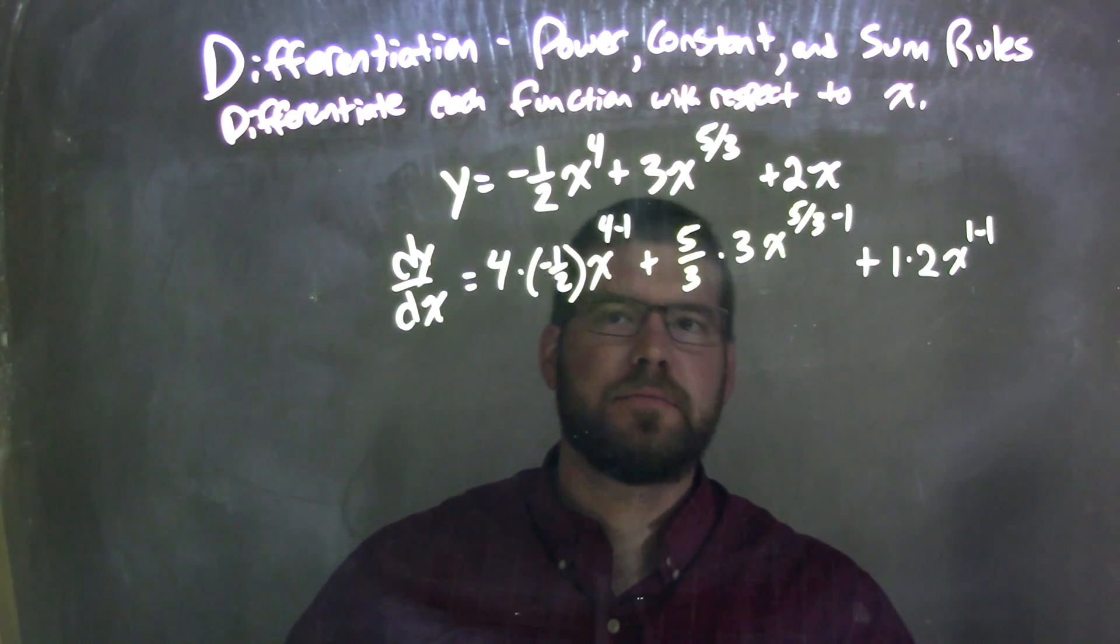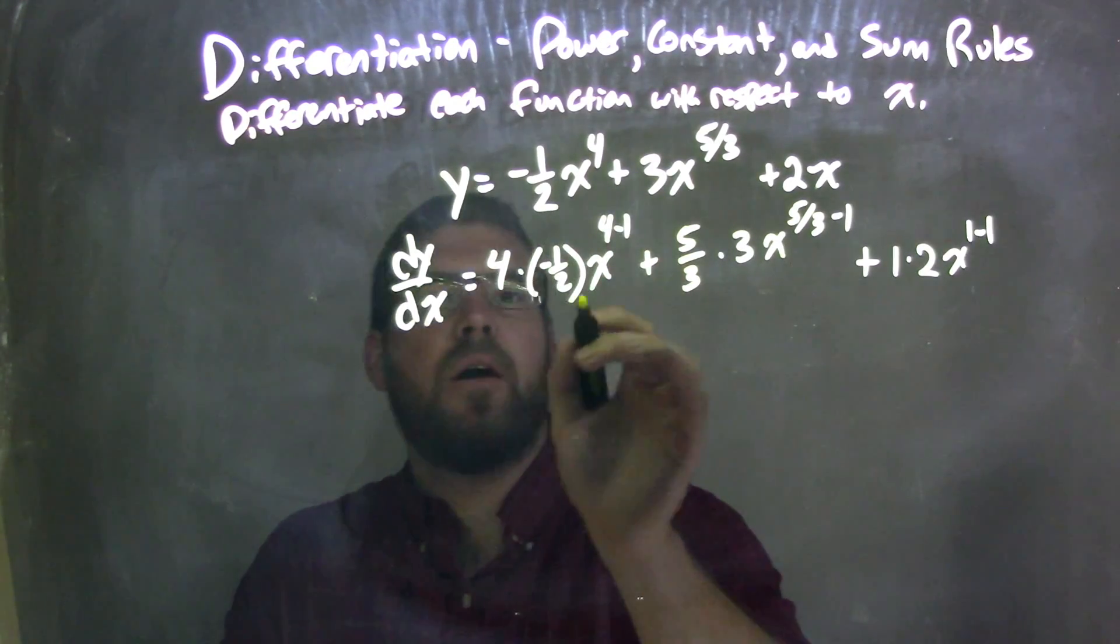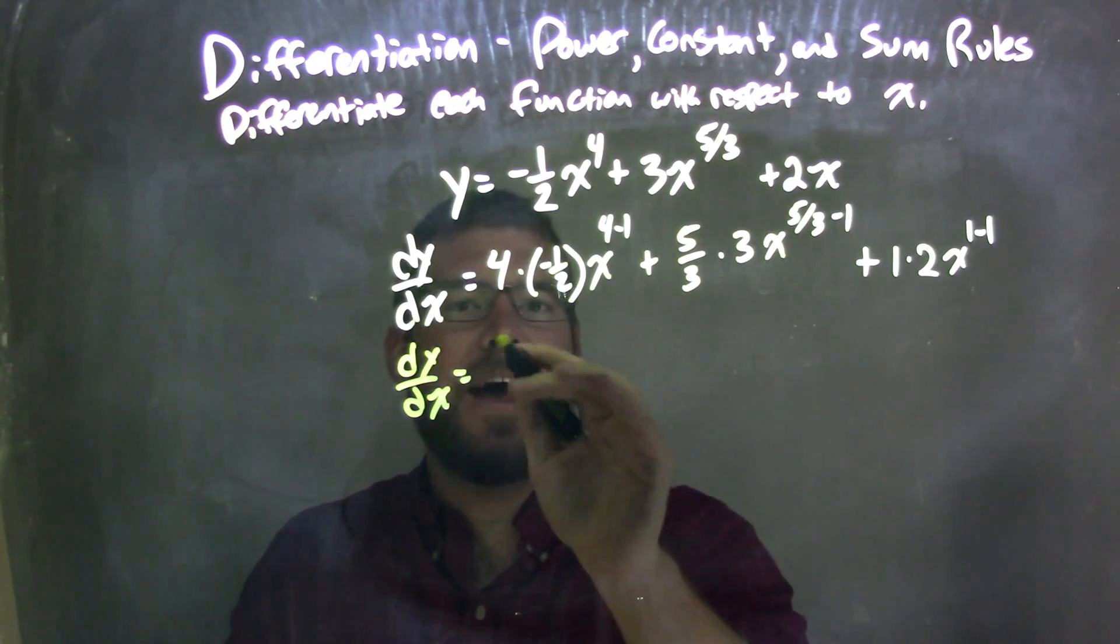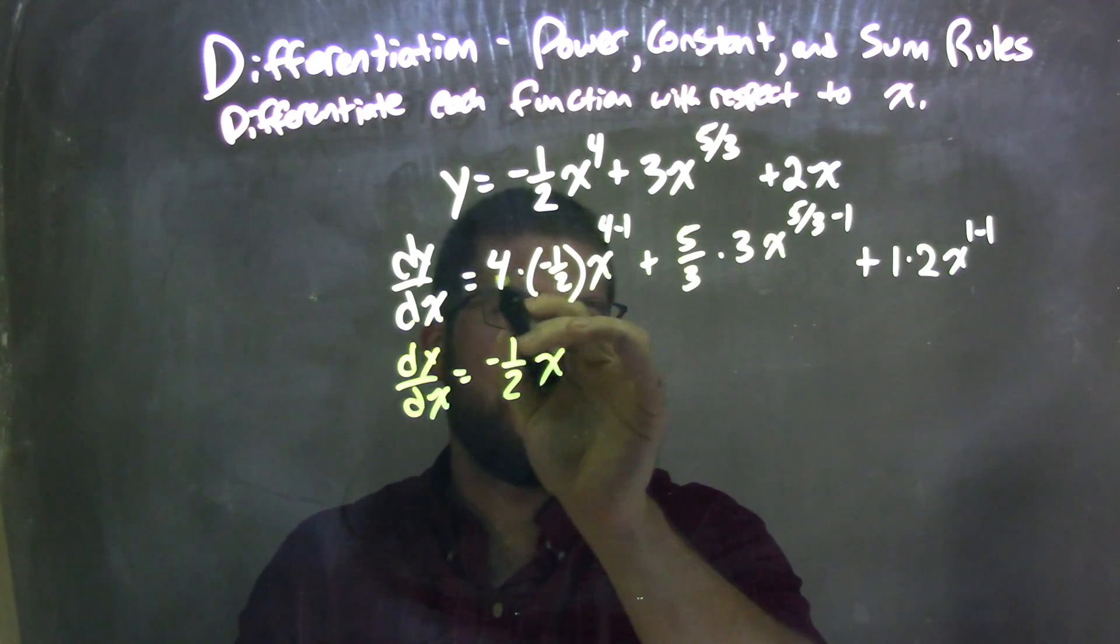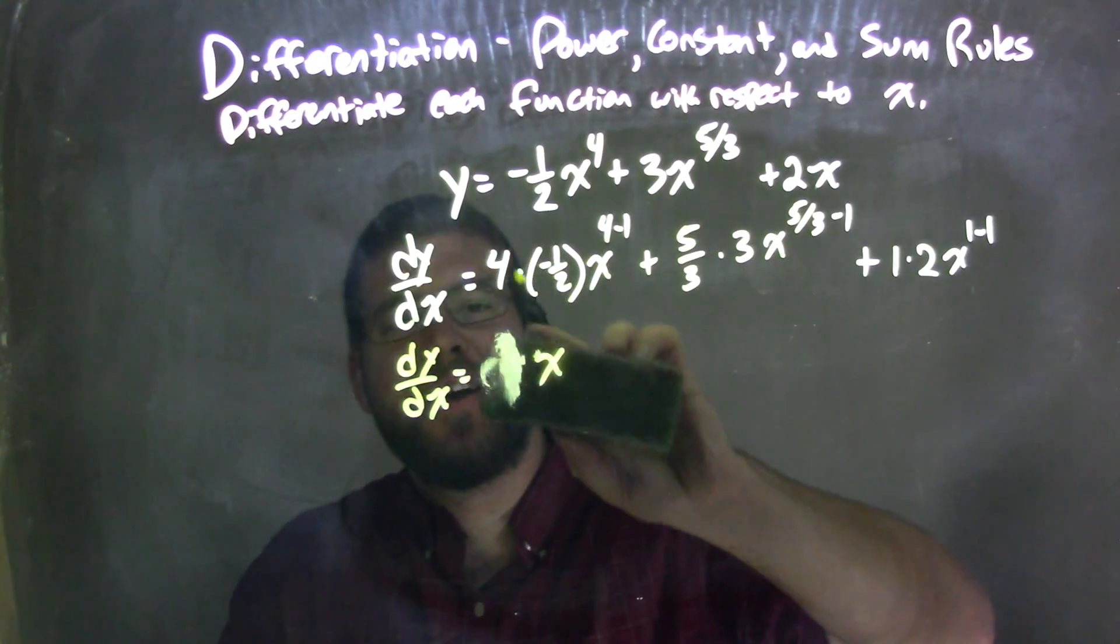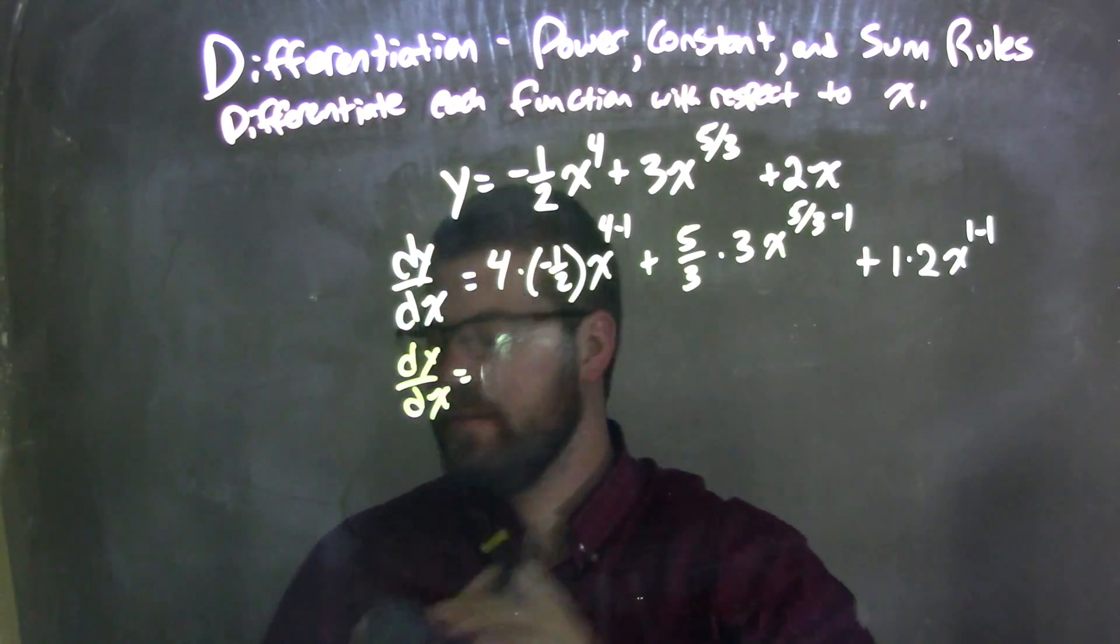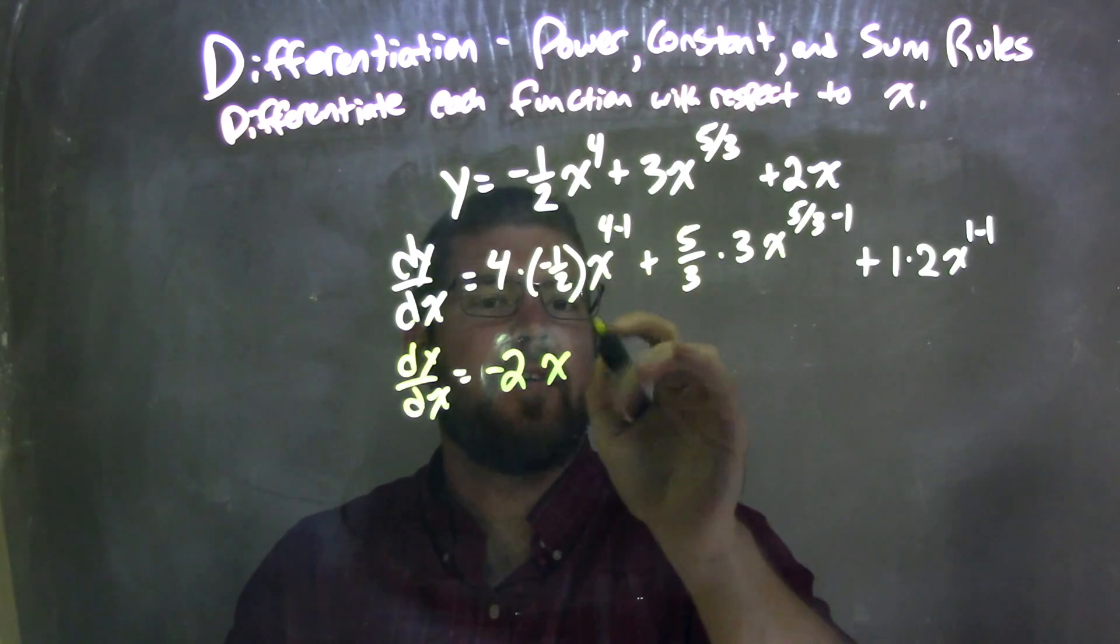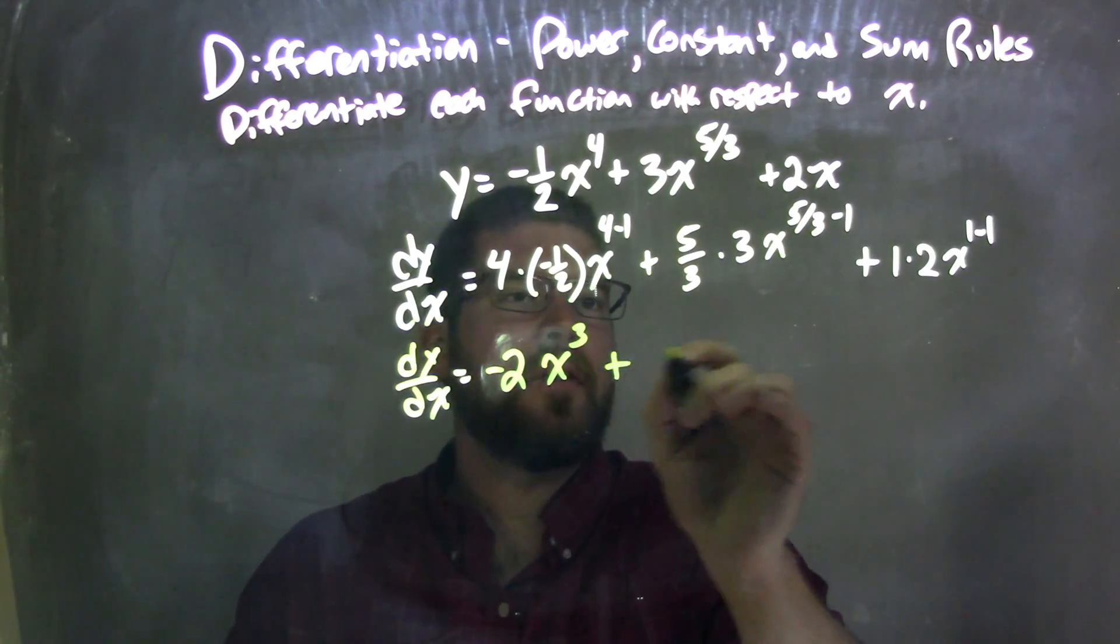Now let's do some simplification here. dy dx is equal to four times negative one-half is negative two, x to the four minus one, which is three, plus.